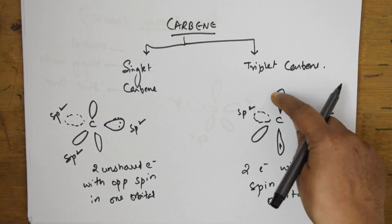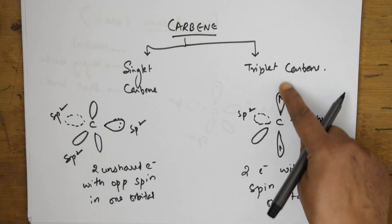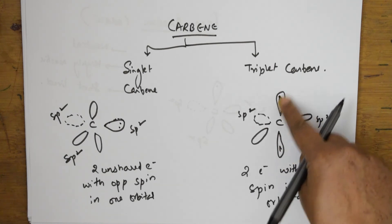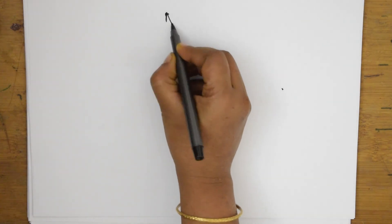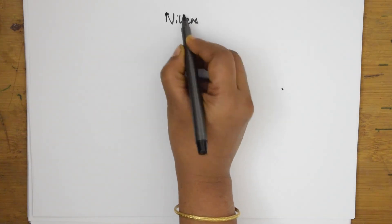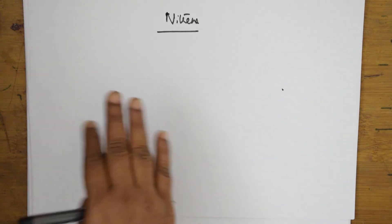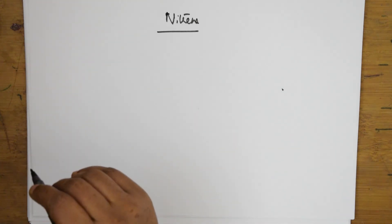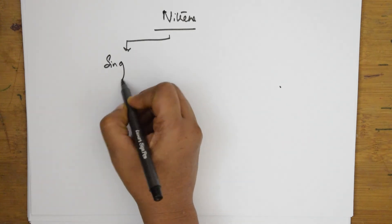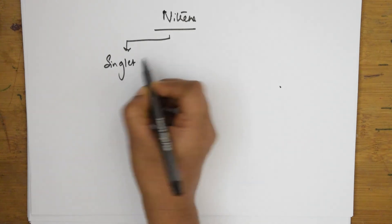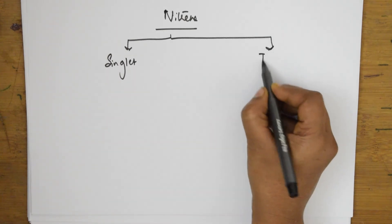The shape of triplet carbene is linear with SP hybridization — that is the key difference. Now when we take nitrene, it also has two types: singlet nitrene and triplet nitrene.